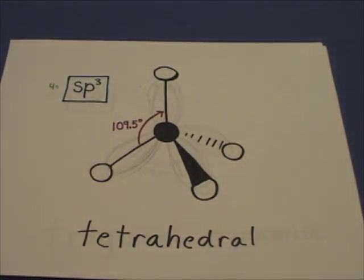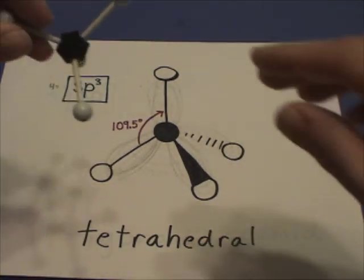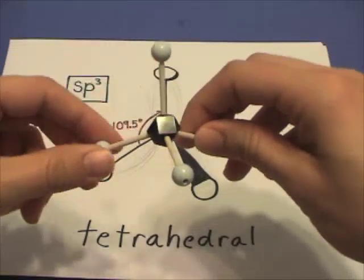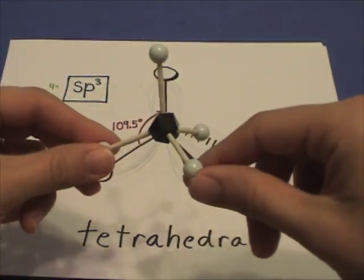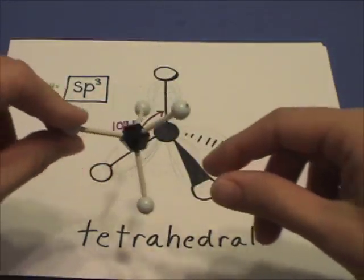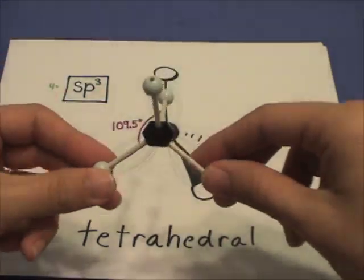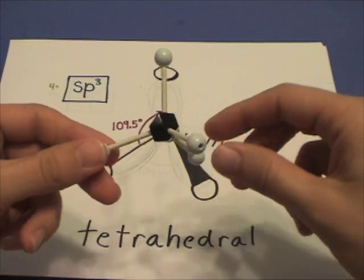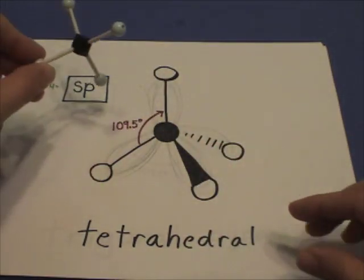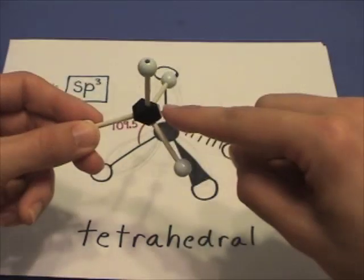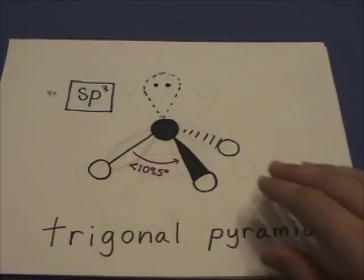With four sigma bonds and no lone pairs, the molecular shape is tetrahedral with a predicted 109.5 degree bond angle. This central atom is sp3 hybridized.